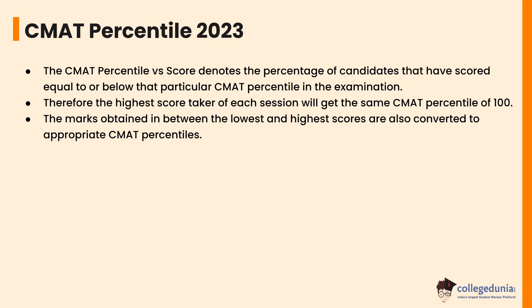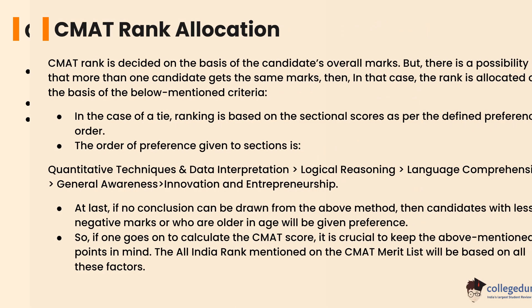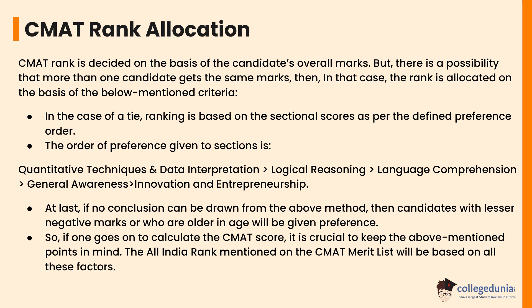The CMAT percentile versus score denotes the percentage of candidates that have scored equal to or below that particular score. Therefore, the highest scorer of each session will get a percentile of 100, and marks obtained between the lowest and highest scores are also converted to appropriate CMAT percentiles. CMAT rank is decided on the basis of the candidate's overall marks, but if more than one candidate gets the same marks, the rank is allocated based on tie-breaking criteria. In case of a tie, ranking is based on sectional scores in the following preference order: Quantitative Techniques & Data Interpretation, Logical Reasoning, Language Comprehension, General Awareness, and Innovation & Entrepreneurship.